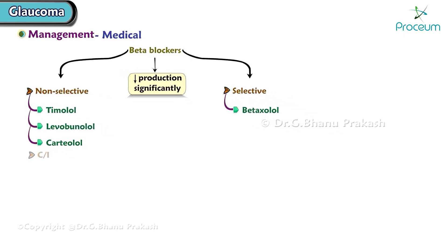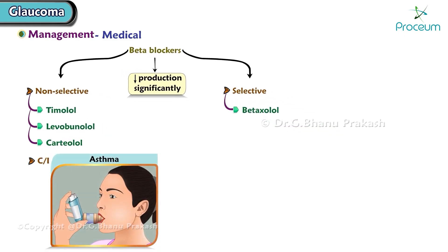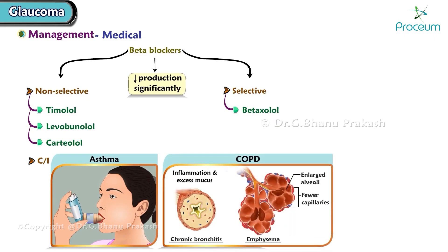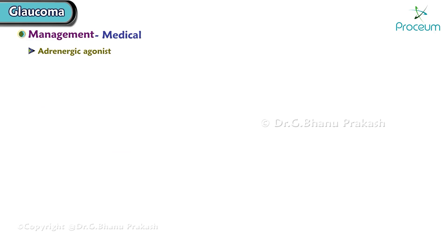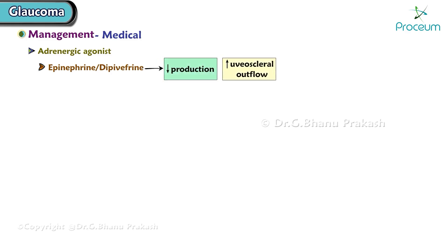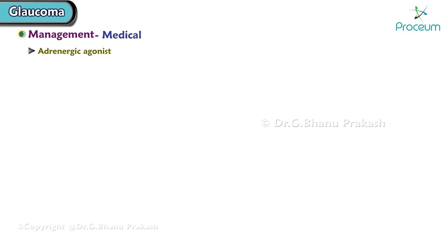Beta blockers are contraindicated in asthma, chronic obstructive pulmonary disease, and arrhythmias. Adrenergic agonist drugs include epinephrine or dipivefrin. These drugs work by a dual mechanism: they decrease production as well as increase uveoscleral outflow.